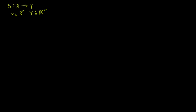We know that if S is a linear transformation, it can be represented by a matrix-vector product. We can write that S of some vector X is equal to some matrix A times X. Since X is a member of Rn, matrix A has to have n columns, making it an m by n matrix.